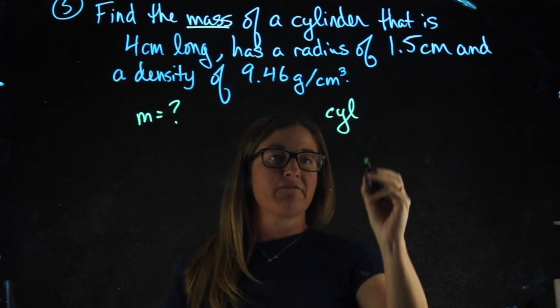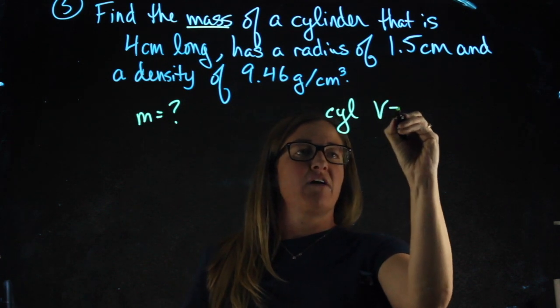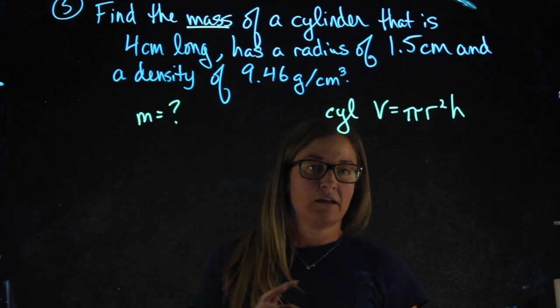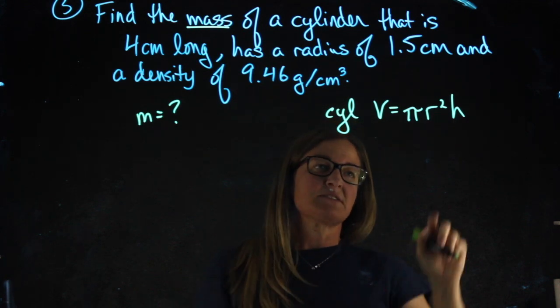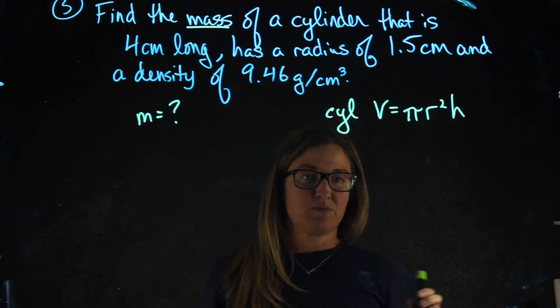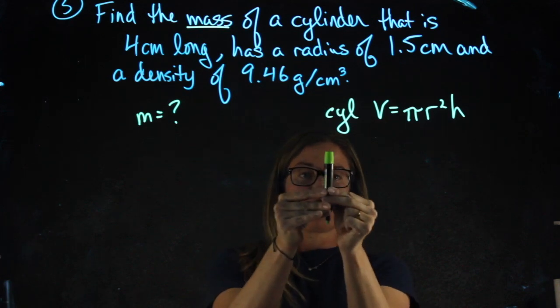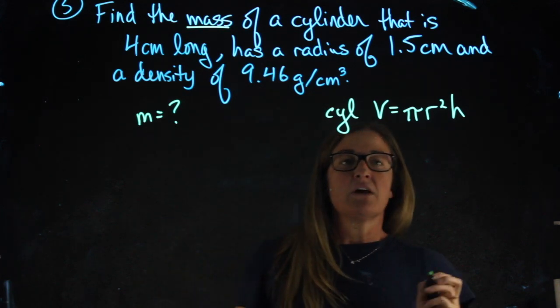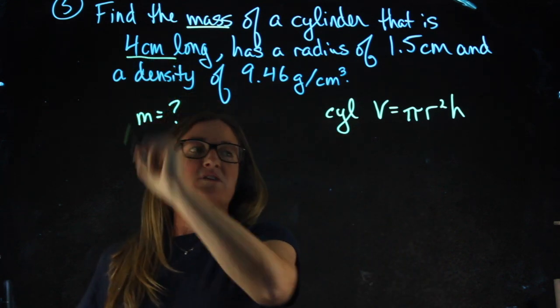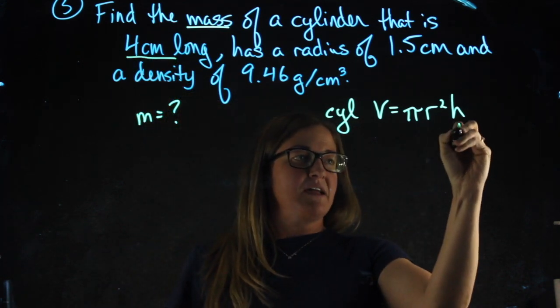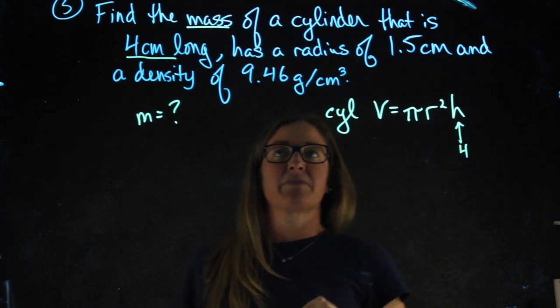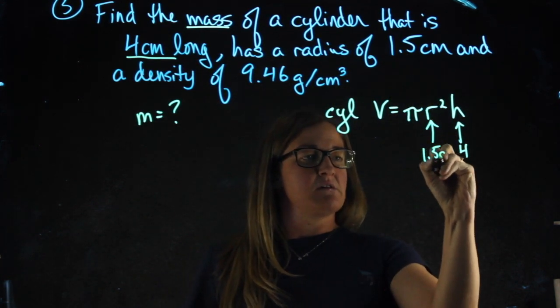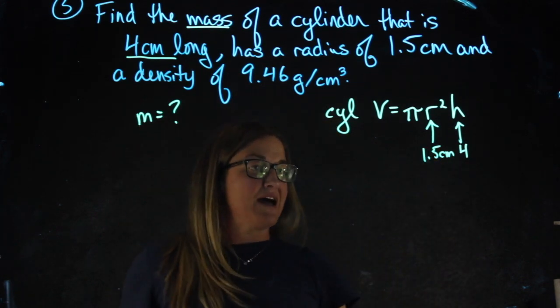Therefore, we know our volume formula will be volume equals pi r squared times the height. Now remember with the cylinders, sometimes we call it height and sometimes we call it length. It's just a matter of whether the cylinder is standing like this or standing like this on its side. So in this case, four centimeters long is going to be this term. We know the radius is 1.5 centimeters and we're looking for the mass.